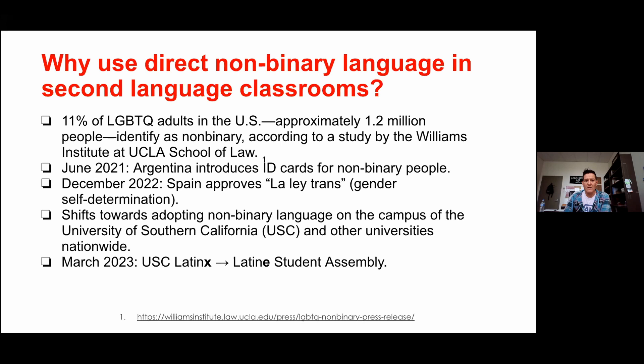In addition to that, we do see a movement already in several countries across the world to begin including this. When one asks the question of why you should include it in your classroom, you should be representing what is happening outside. We already have that — for example, in June 2021 in Argentina, ID cards already reflect non-binarism, and in December 2022, there are laws approving transgender self-determination and other trans-related rights, which again point to the fact that this is happening in our society and should therefore be reflected in what we do in our classroom.